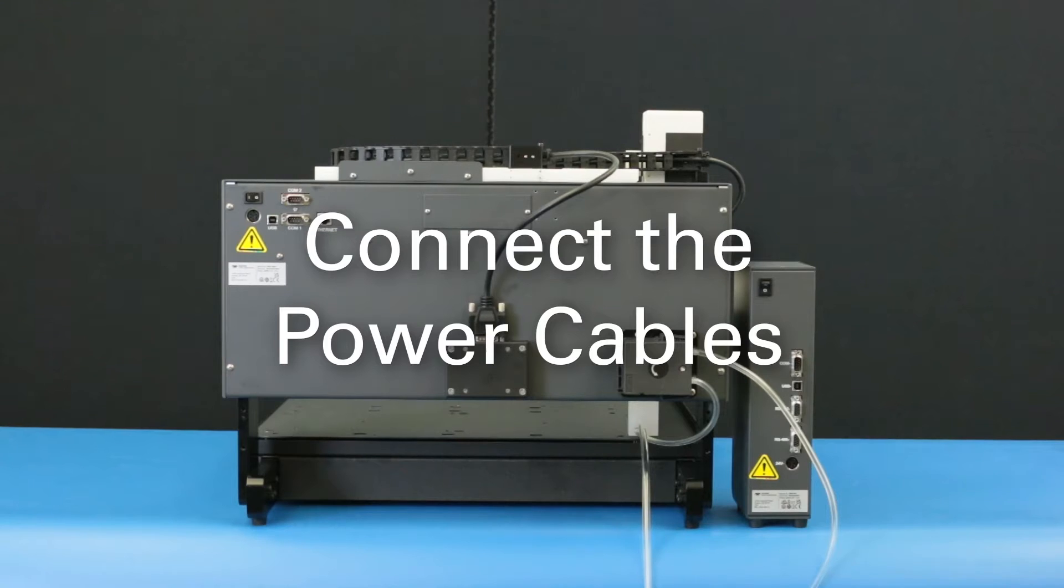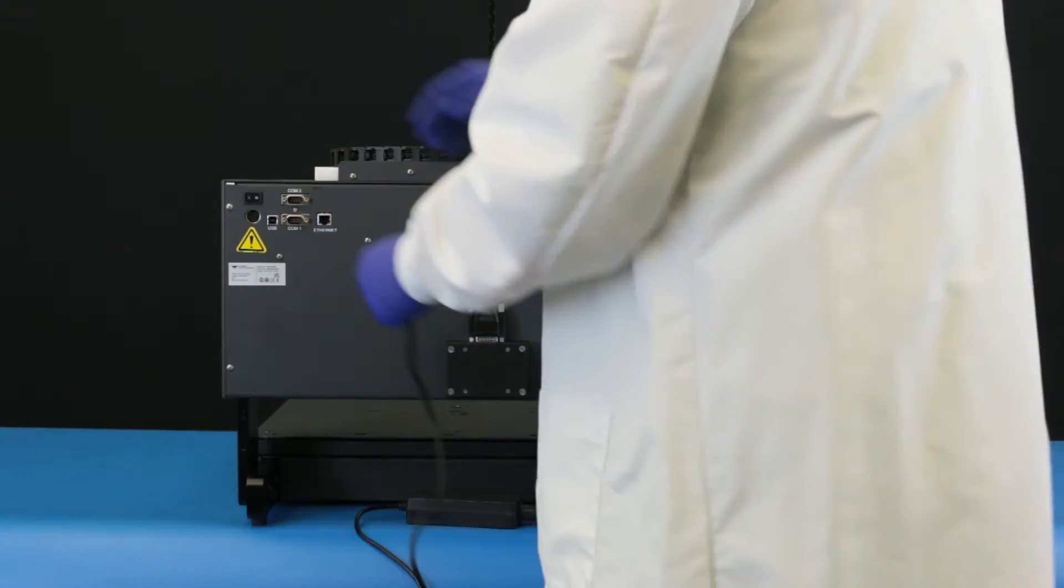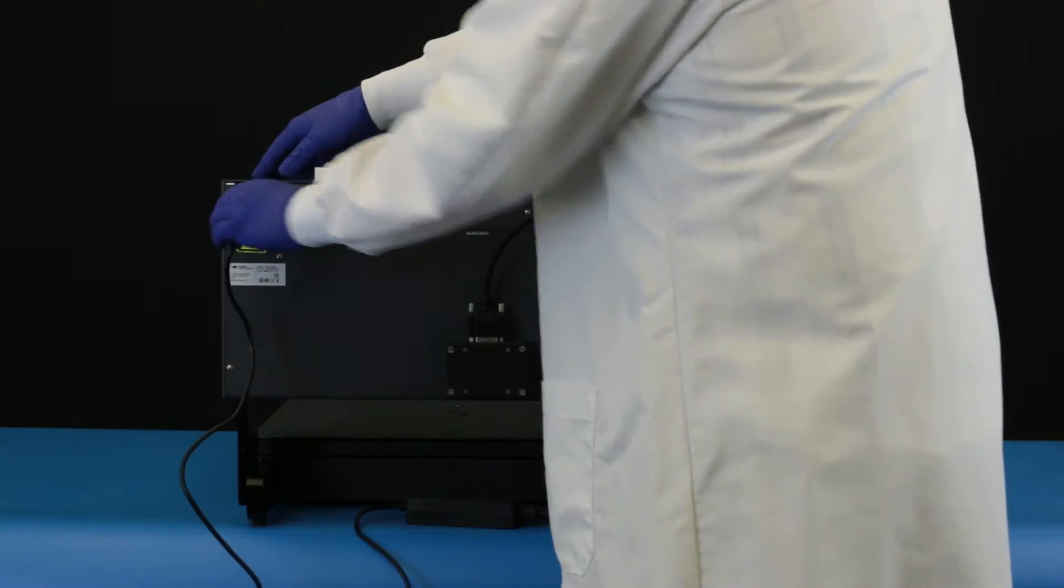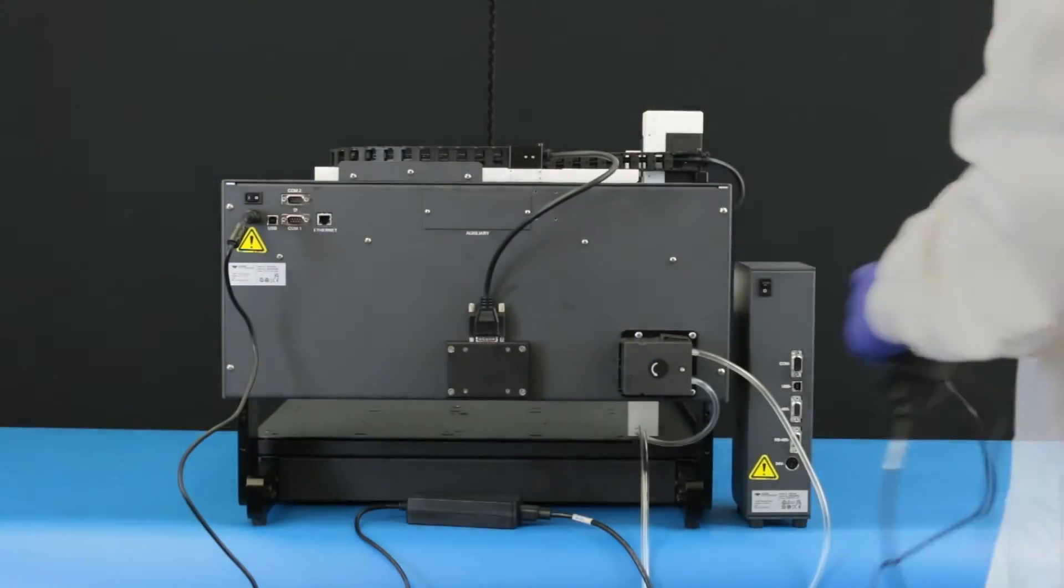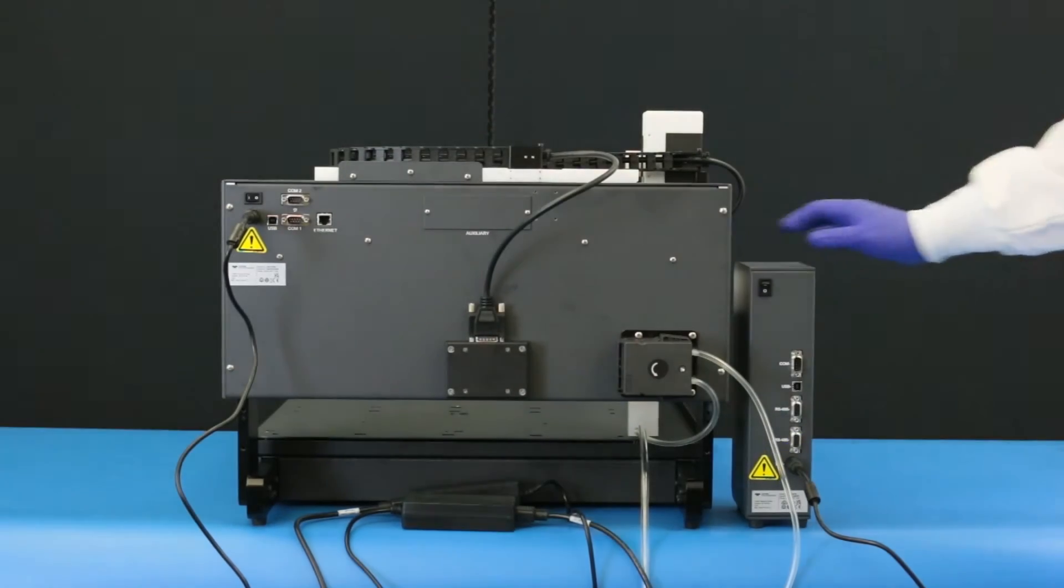Connect the power cables. Be sure the power switch on the autodiluter is off. The two power supplies are identical. Plug one power supply into the power connector on the autodiluter. Plug the other power supply into the power connector on the syringe pump module.